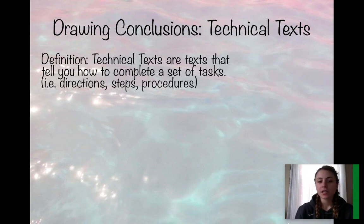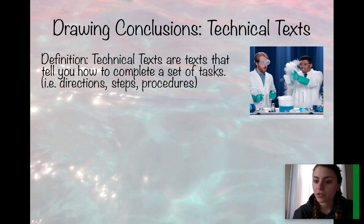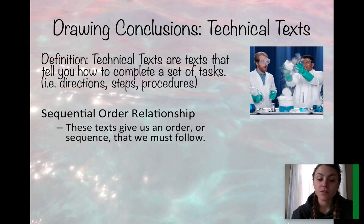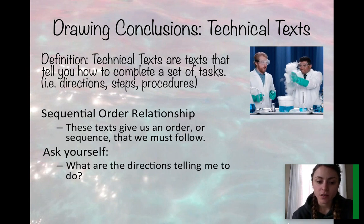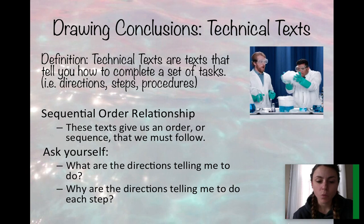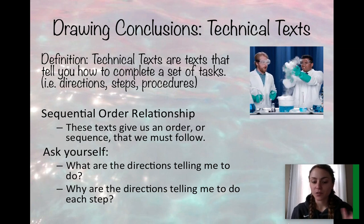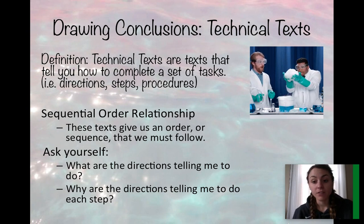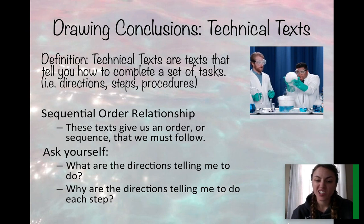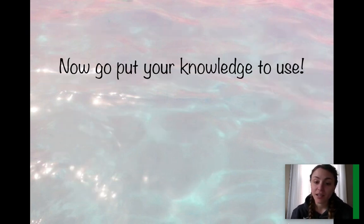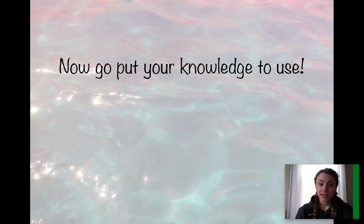When drawing conclusions in a technical text — texts that tell you how to complete a set of tasks, such as directions, steps, or procedures — the relationship is a sequential order relationship. These texts give us an order or sequence that we must follow. When drawing conclusions we ask: What are the directions telling me to do? And why are the directions telling me to do each step? It's very important not to mess with the order of the steps, because you could end up with an explosion in an experiment, or like I said, a bad-tasting cookie if you leave out an ingredient. Now go and put your understanding of drawing conclusions in scientific, historical, and technical texts to use. See you next time!